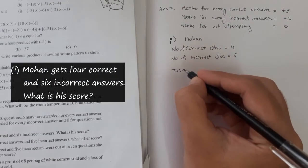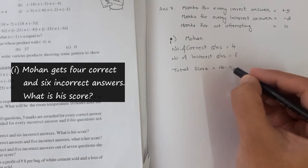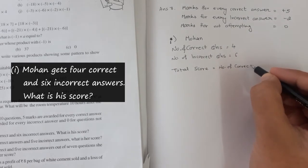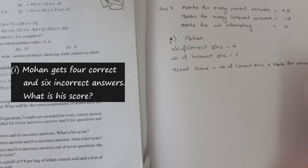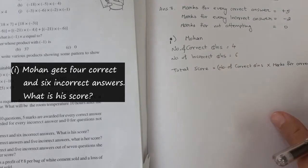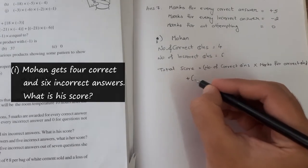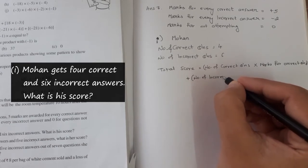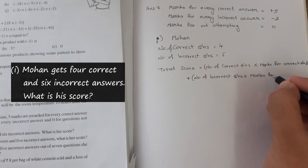Therefore total score can be calculated by number of correct questions times marks for correct questions plus number of incorrect questions times marks for incorrect questions.